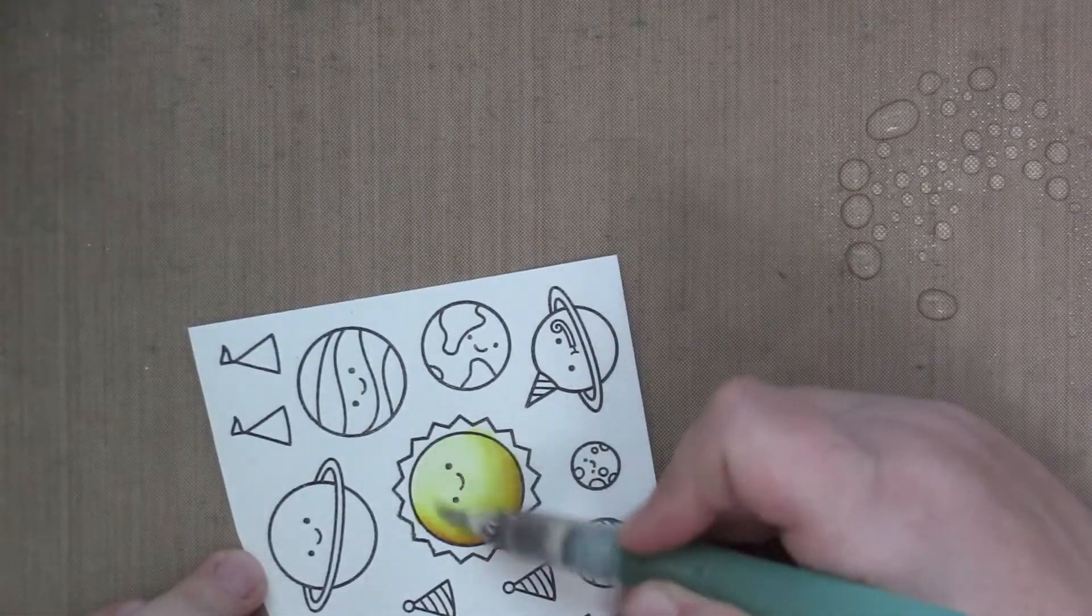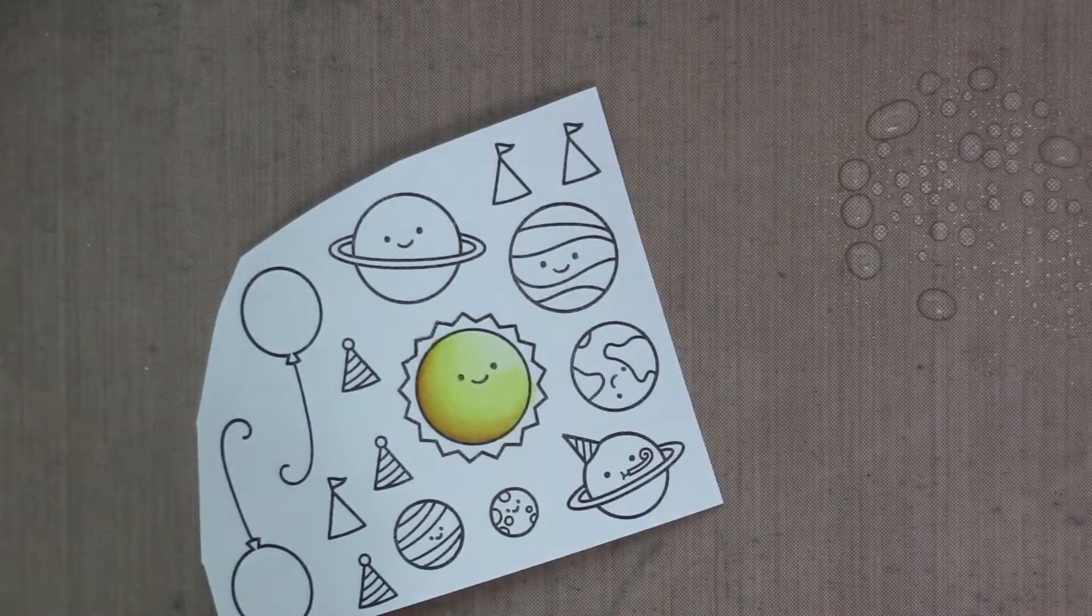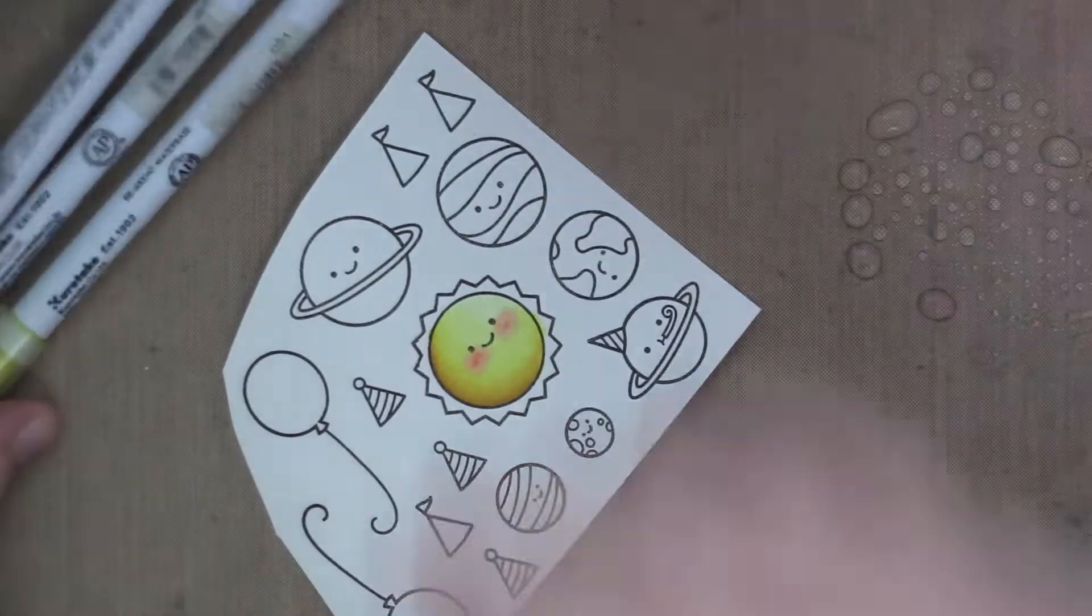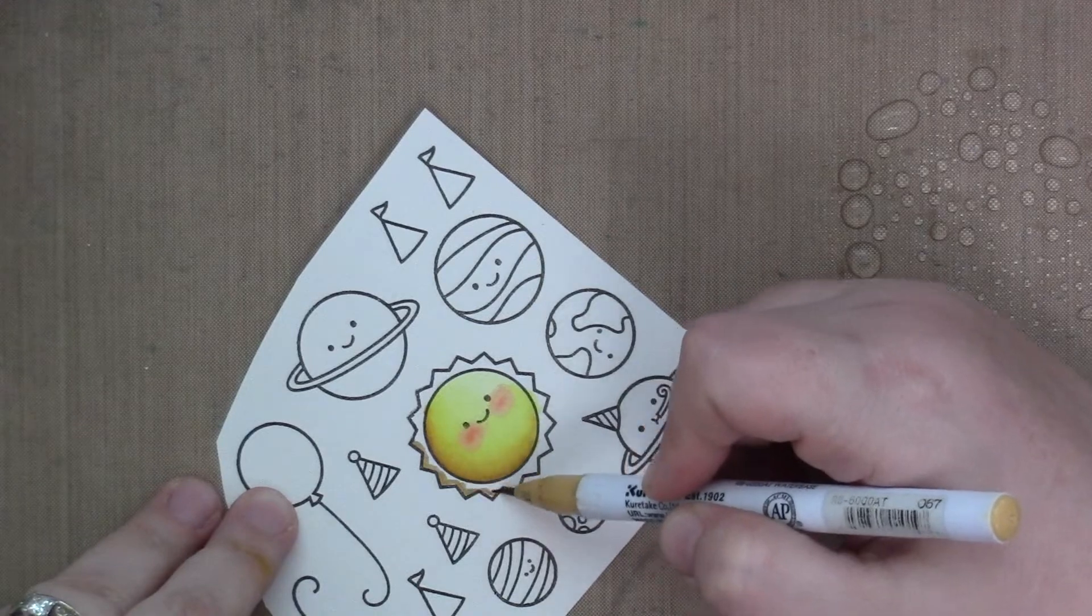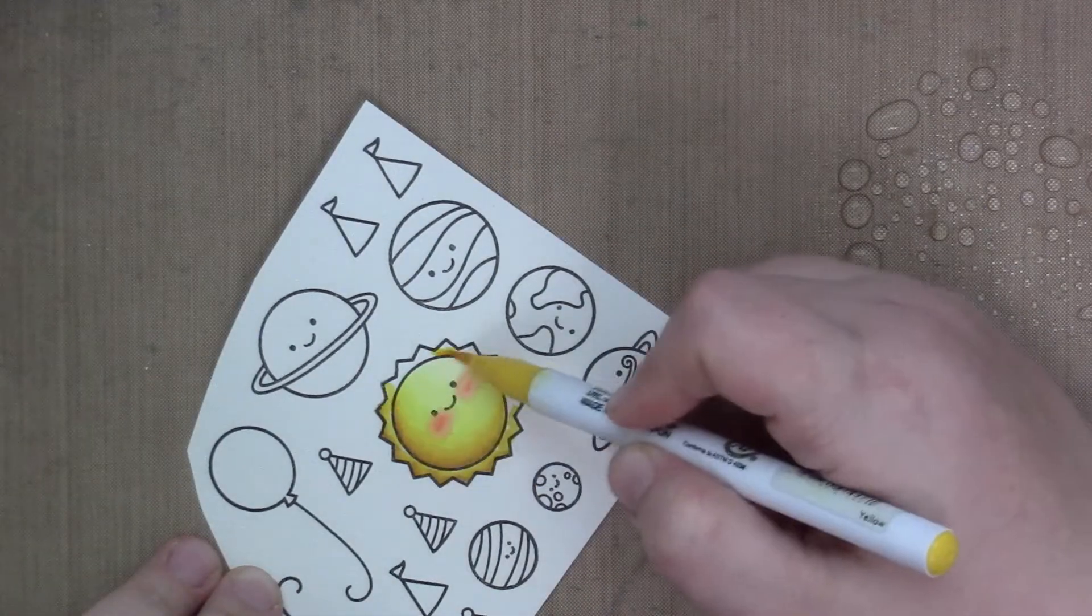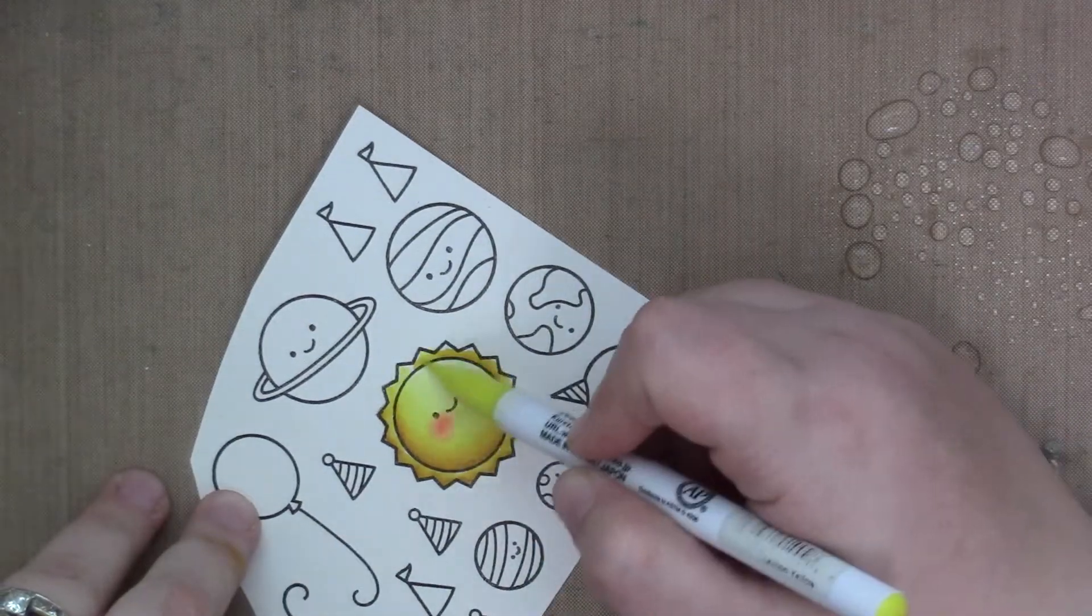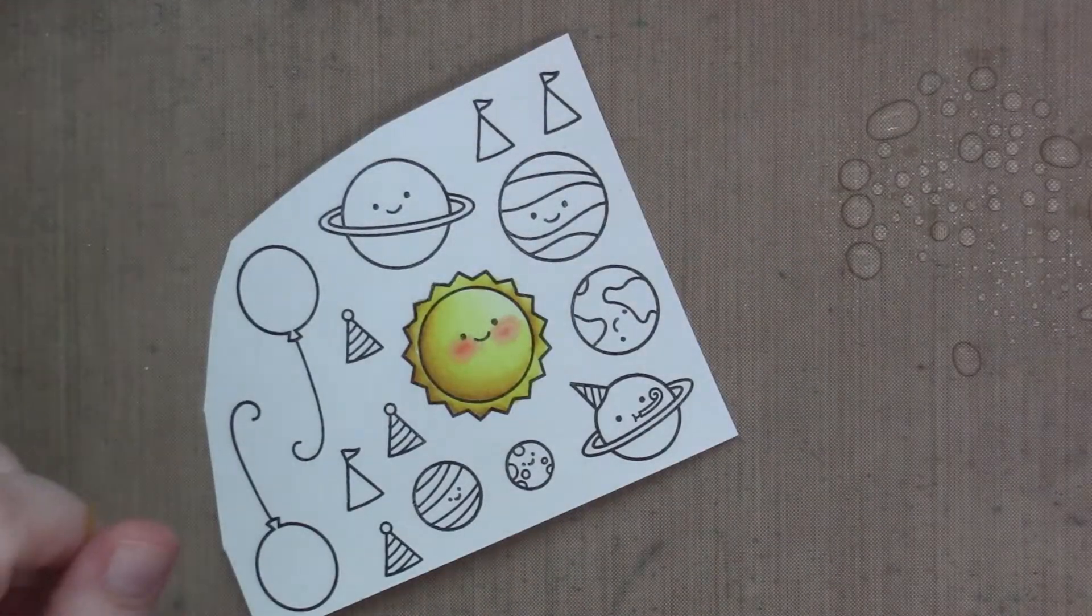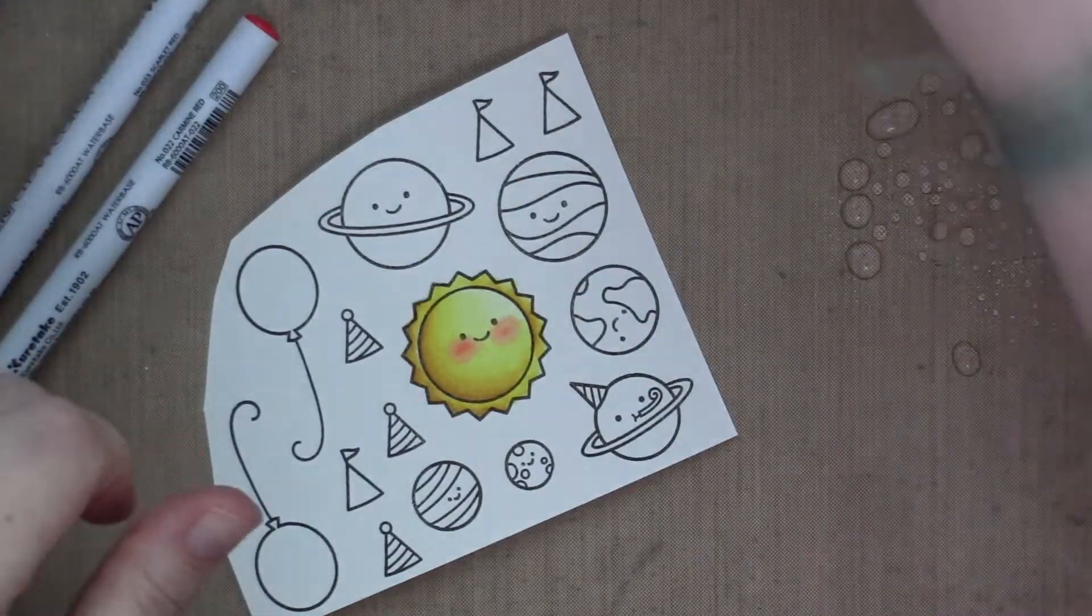I always use the darkest color where I want the shadow to be on my image, and then I use my medium color to pull it out, and then my lightest color to pull that out, leaving white space towards the lightest part of my image. And then I use my water brush to blend it all together. This is what I do for all my images.